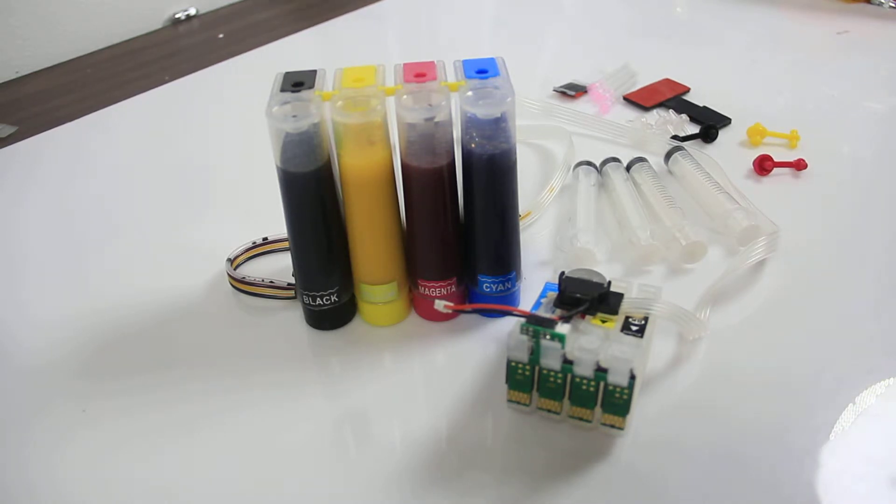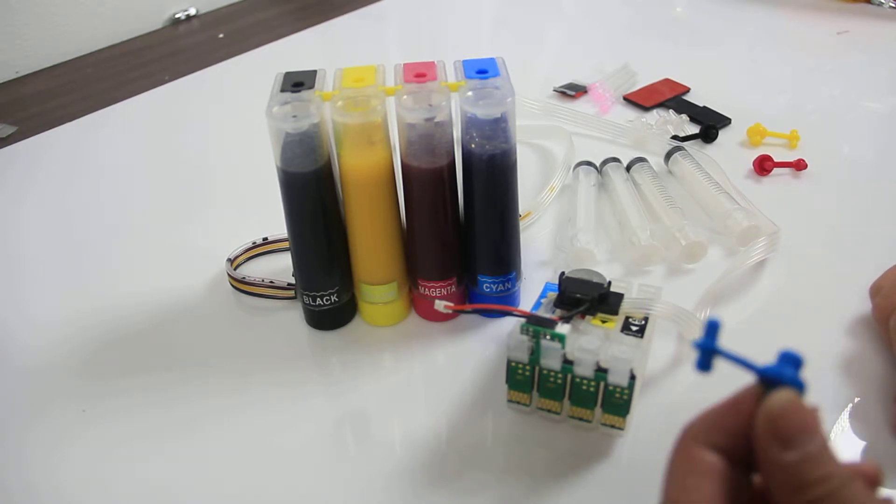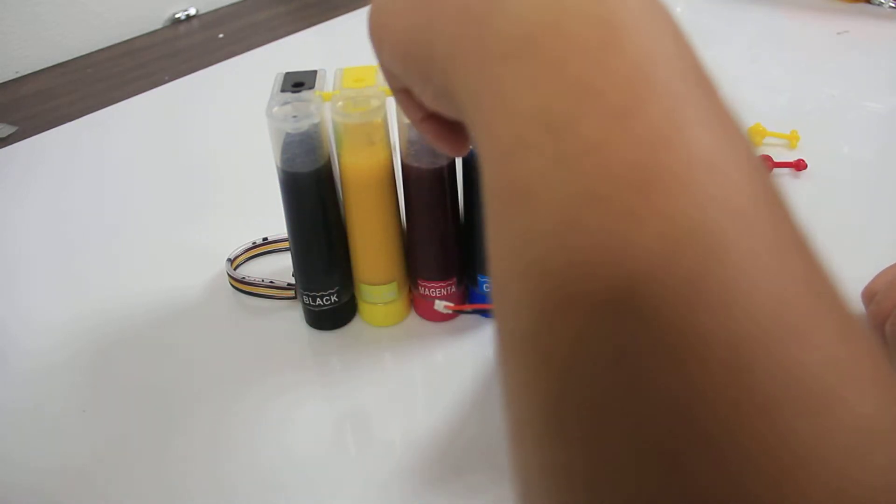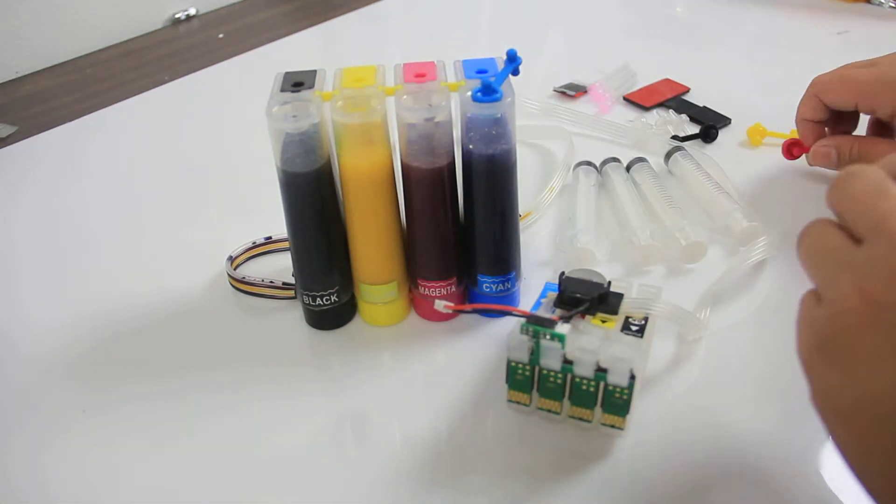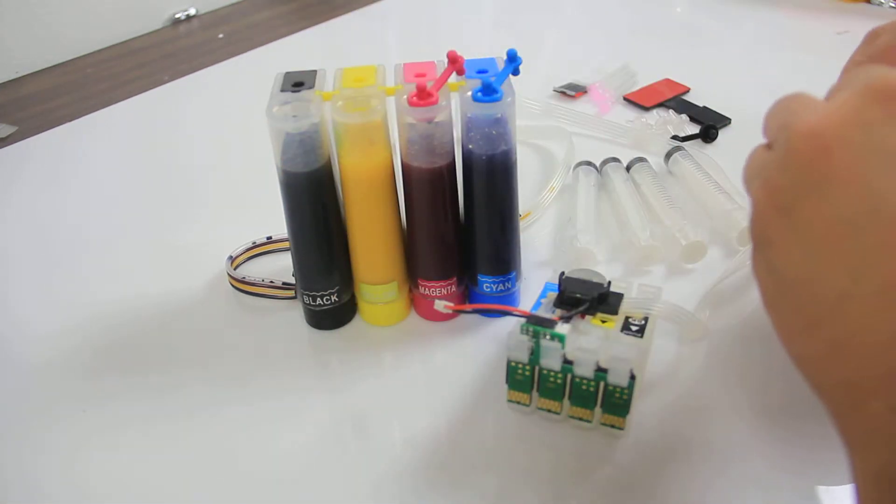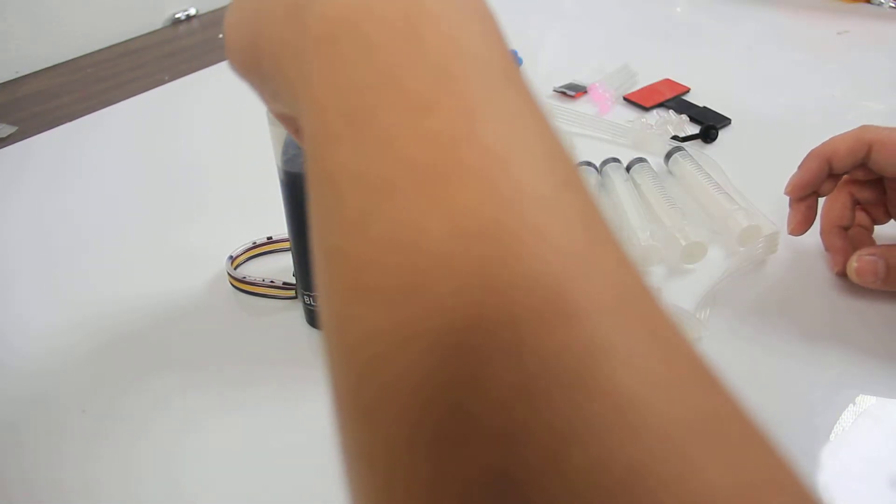Okay, so now that we have everything set up here filled with ink, we're going to prime the system so that the cartridges can actually have some ink going through them. But before we do that, we're going to close the tops off here. So you have these rubber plugs and you can align them and make sure that the colors match. I'm going to place them on there.